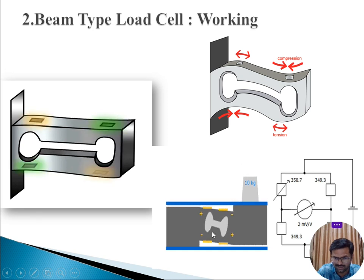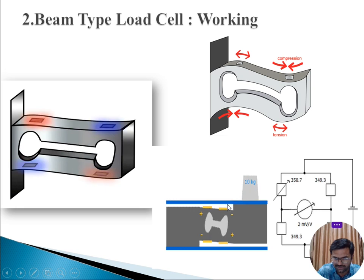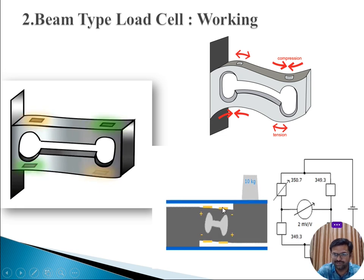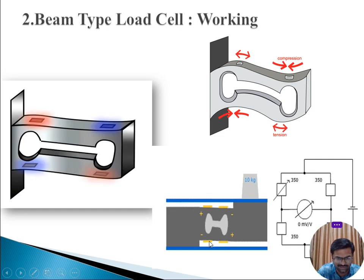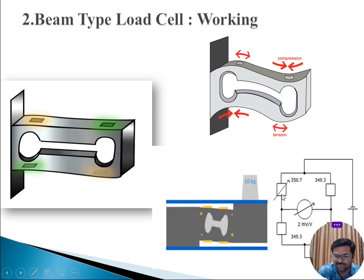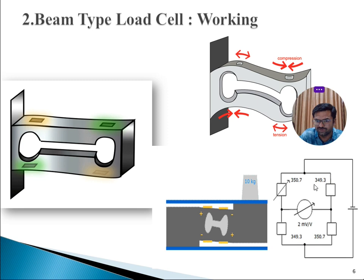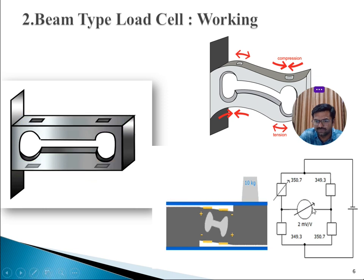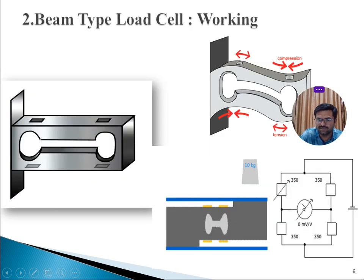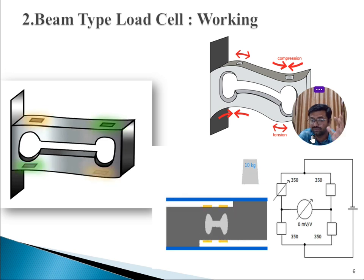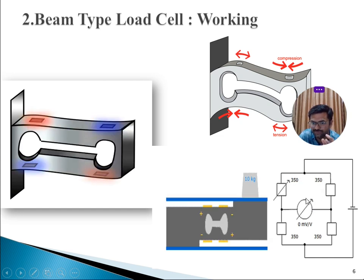The yellow-colored elements in the diagram are the strain gauges. After applying pressure, one gauge experiences compression, another tension, another compression, and the last tension. This results in a change in resistance — you can observe that previously all resistances were 350 ohms, but after applying pressure they change to values like 349 or 350.7 ohms.